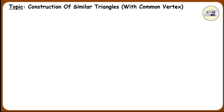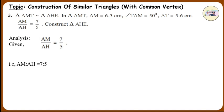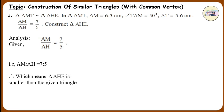Question 3. Triangle AMT is similar to triangle AHE. In triangle AMT, AM is equal to 6.3 cm, angle TAM is equal to 50 degrees, AT is equal to 5.6 cm, AM upon AH is equal to 7 upon 5. Construct triangle AHE. Analysis: Given AM upon AH is equal to 7 upon 5, that is AM is to AH is equal to 7 is to 5, which means triangle AHE is smaller than the given triangle. And A is a common vertex of both the triangles.